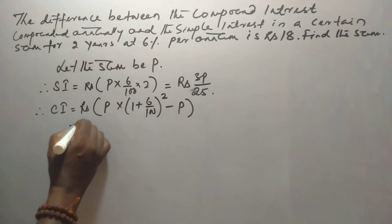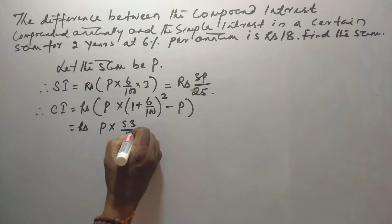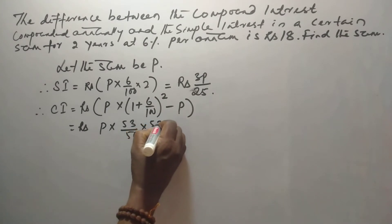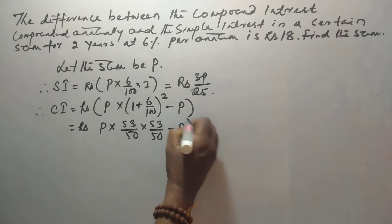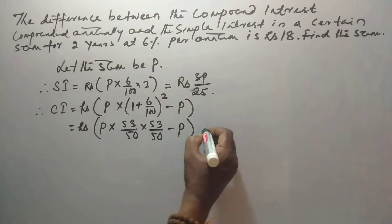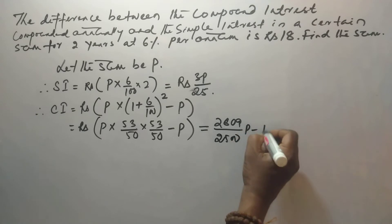This is now P into 53 by 50 and 53 by 50 squared minus P. So this is equal to 2809 divided by 2500P minus P.